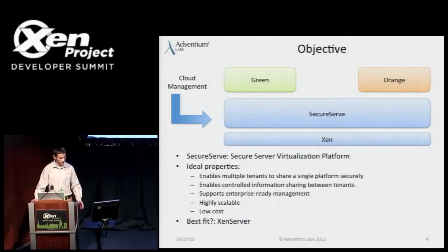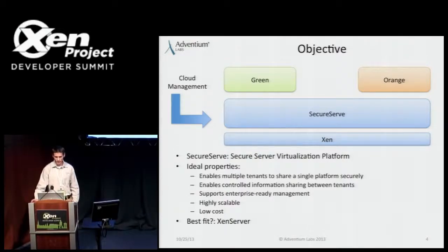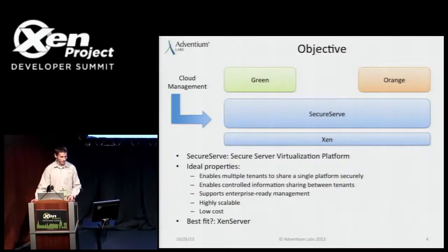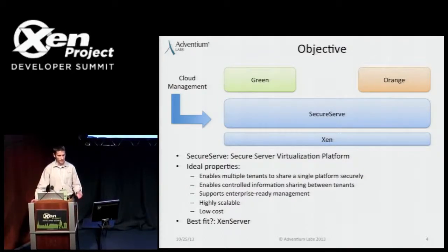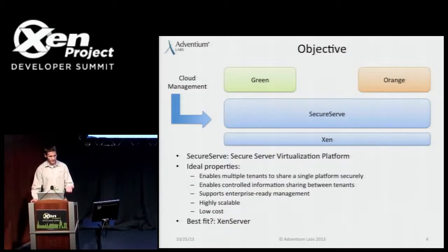There are five key requirements for the system. Our customers require enterprise-ready management and compatibility with tools like Xen Center and cloud management systems like OpenStack and CloudStack. The system also needs to be highly scalable — thousands of VMs on a server has been mentioned. Considering all these requirements, we decided Xen Server was the best fit. It worked out very nicely that Citrix recently released Xen Server to the open source community, which provides us the opportunity to do this work.